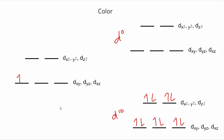Next we need to briefly talk about why many transition metal complexes are very brightly colored. It turns out that the crystal field splitting energy tends to correspond to the energy of colored light, and so electronic transitions become possible when we have these two energy levels that weren't possible with five degenerate d orbitals. If this electron absorbs just the right energy of light — corresponding to the crystal field splitting energy — it gets promoted to the upper set.